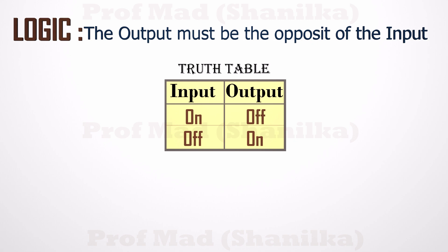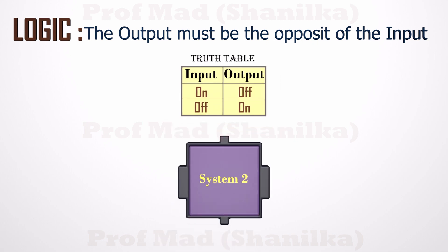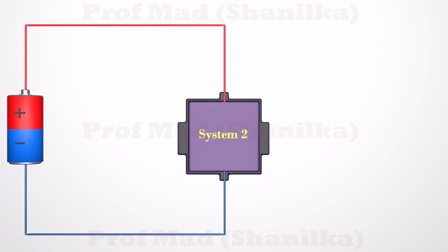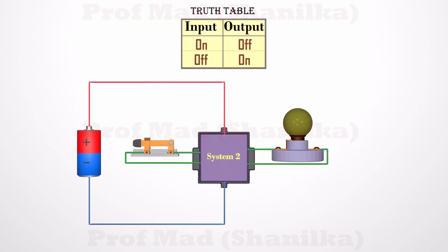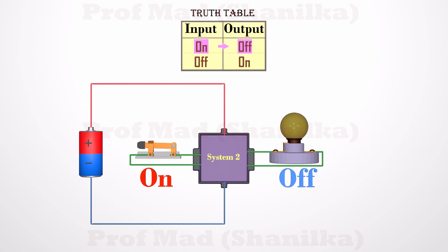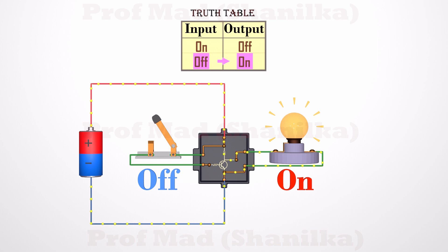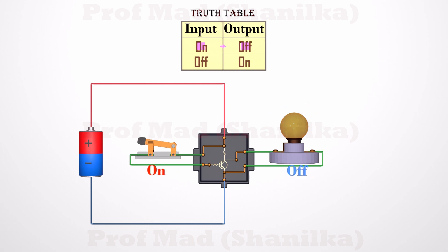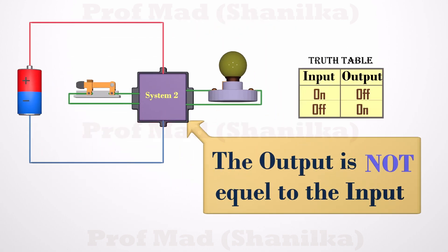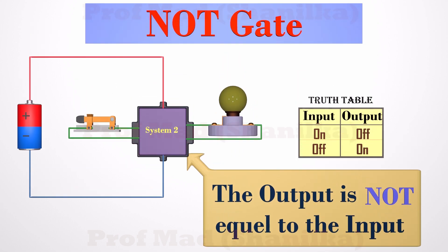This is the truth table for our system. To achieve this, we have to apply some mechanism — let's call it system two. As earlier, this must be connected to a power supply, an input switch, and an output light bulb. In this system, when we turn on the switch, the light bulb must be turned off, and when we turn off the switch, the light bulb must turn on. The internal structure might look like this, but it's not necessary to know the internal structure. The important thing is that it changes the output according to a certain logic. This system does not ever give us the same input as output. So this is called NOT logic. A system that always gives us the exact opposite of the input as the output is called a NOT gate.